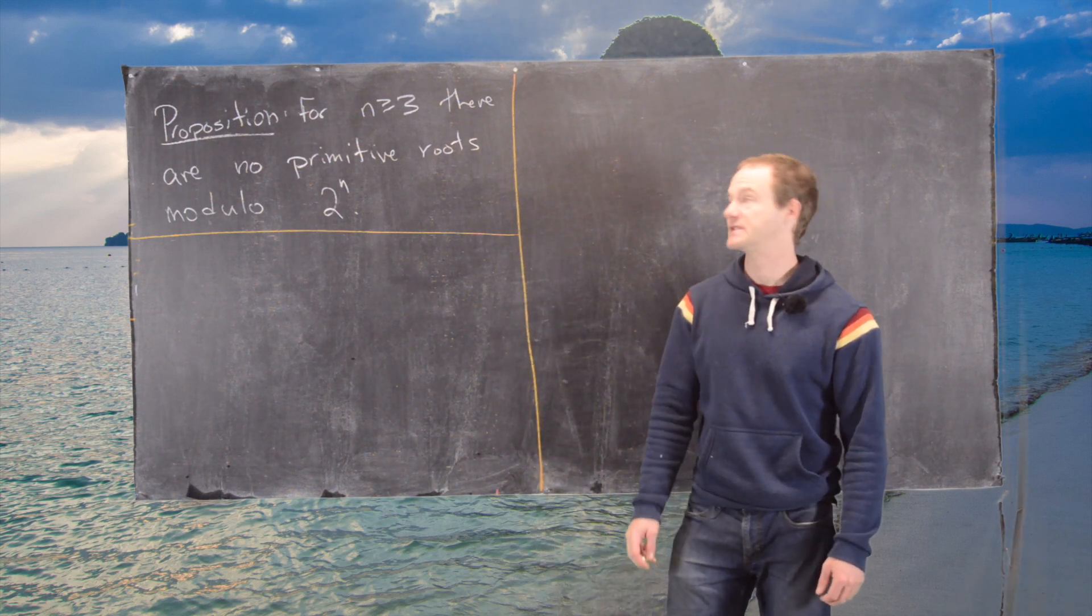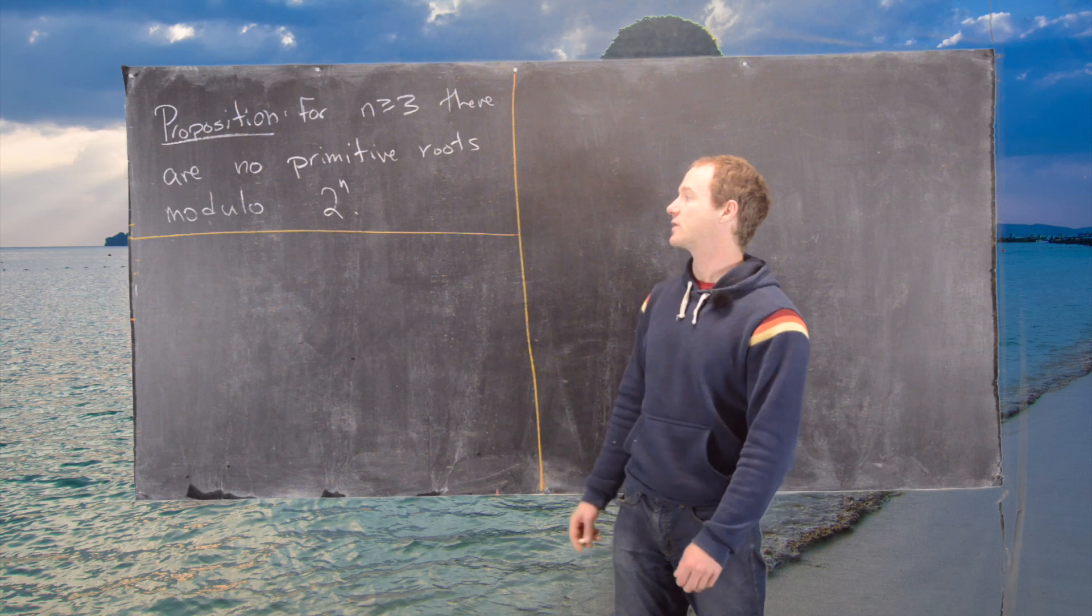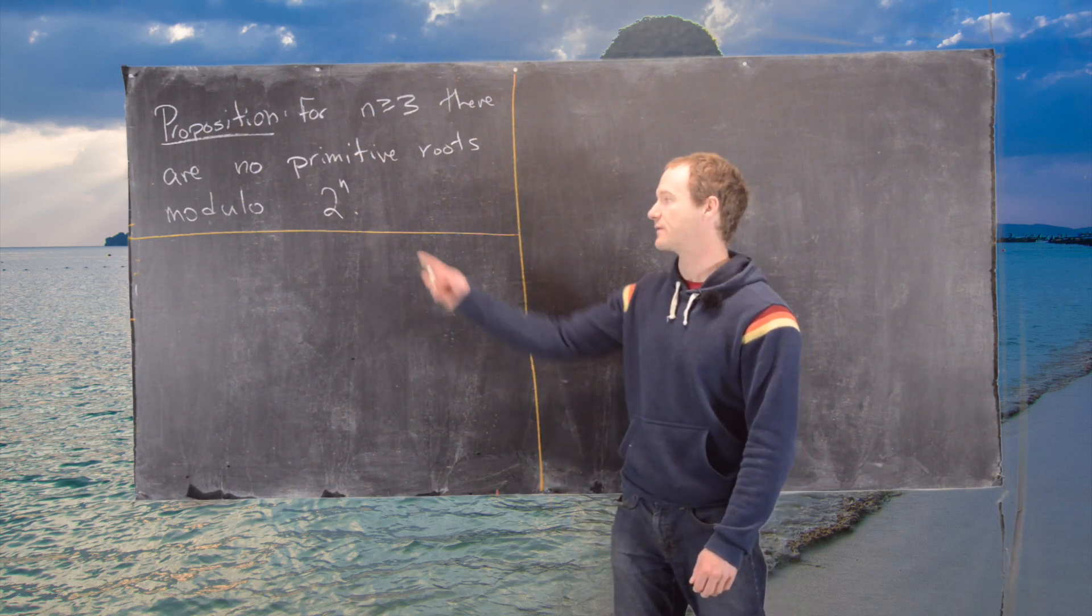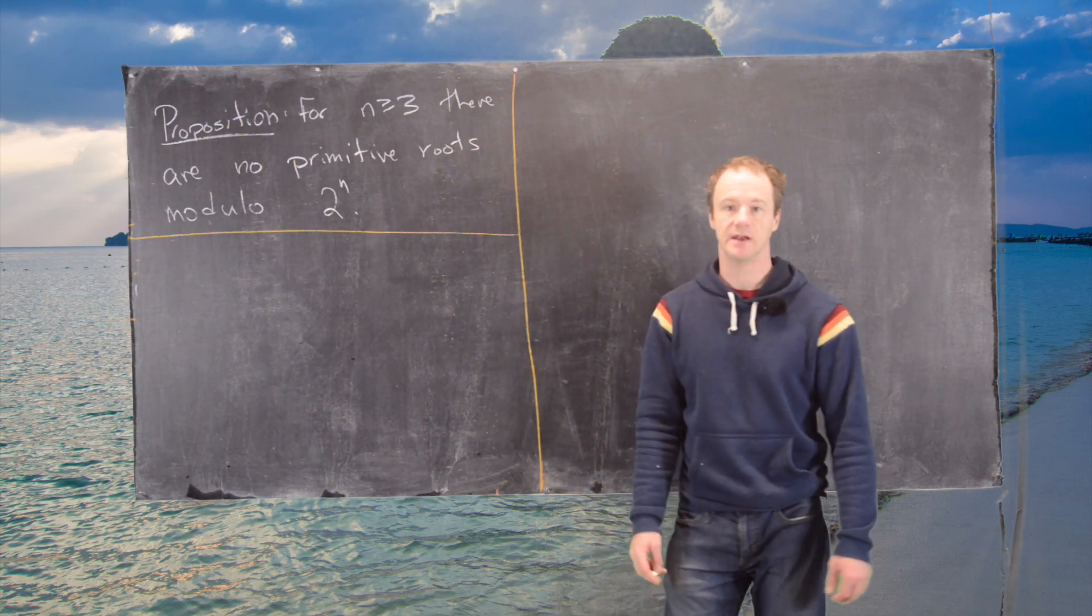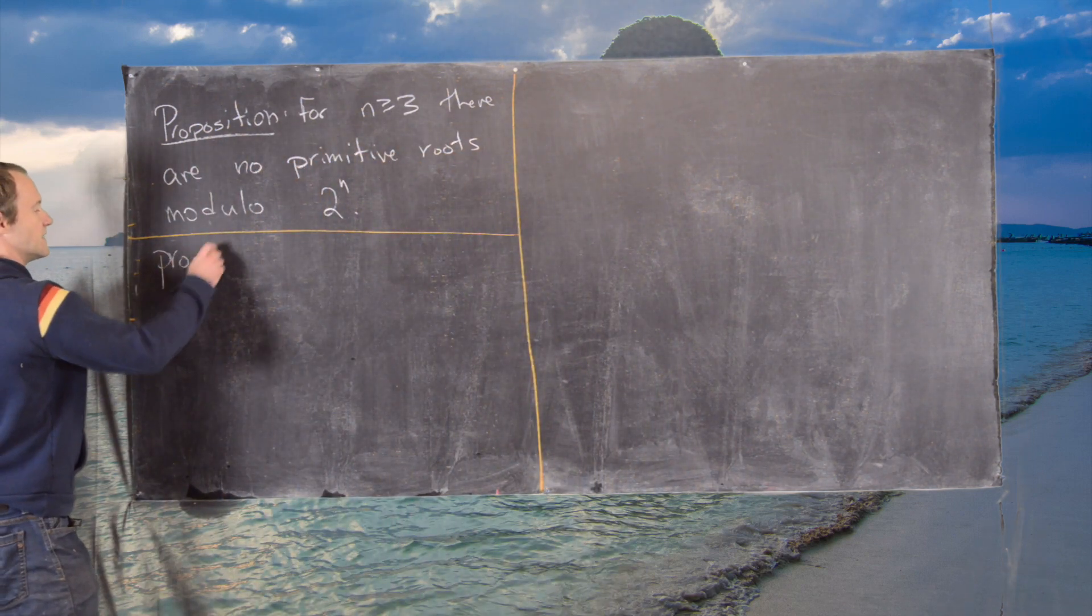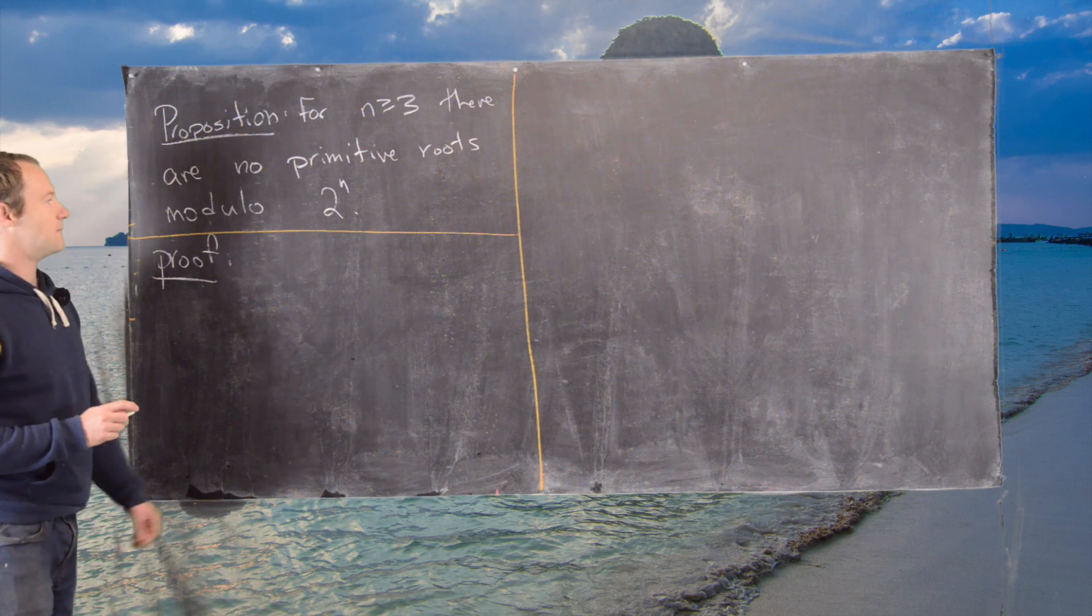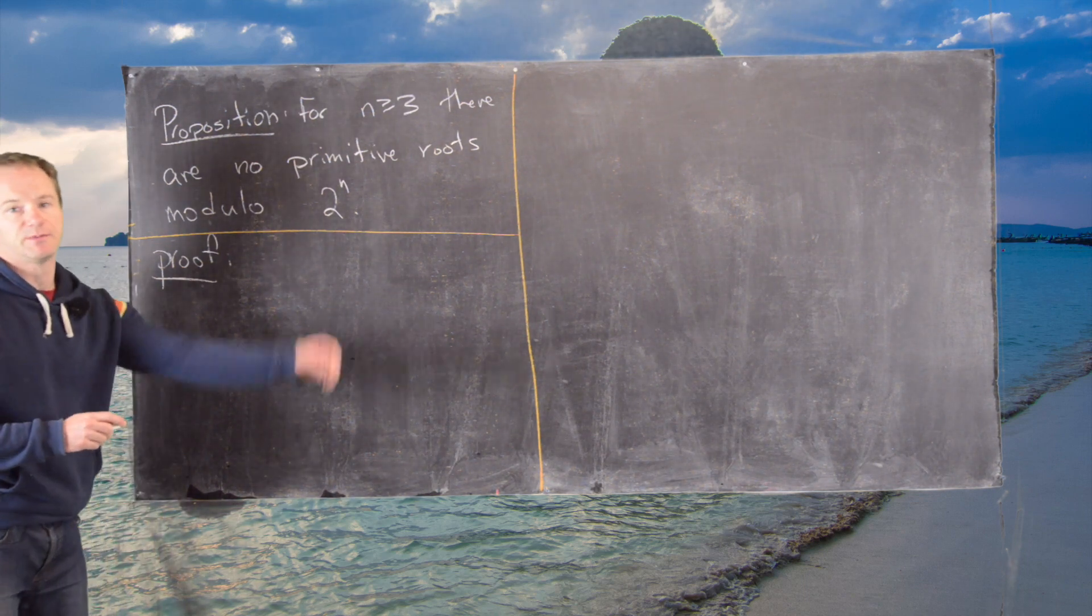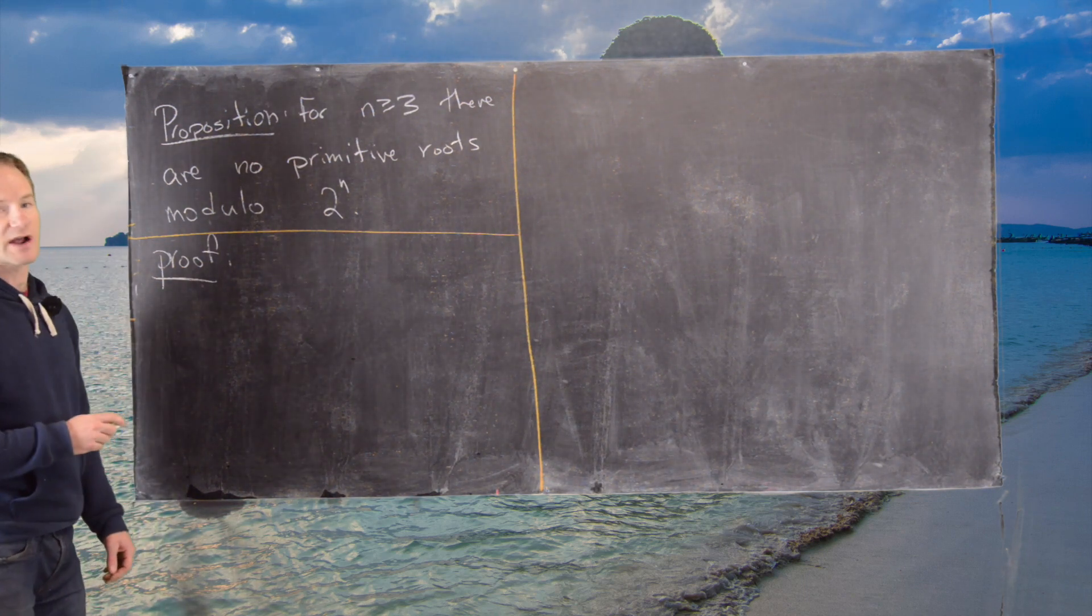And we're starting out with this following proposition. So for n bigger than or equal to 3, there are no primitive roots modulo 2 to the n. And so there's a previous video where we show that there are no primitive roots modulo 8, which is 2 cubed, but we'll reproduce that proof here as a base case.